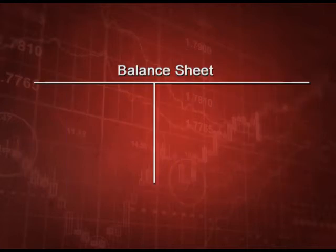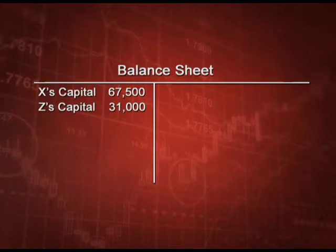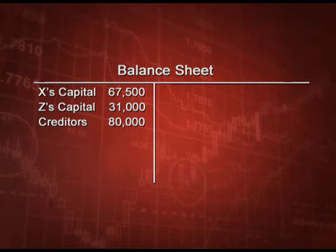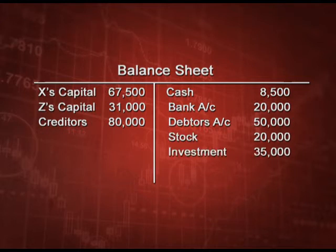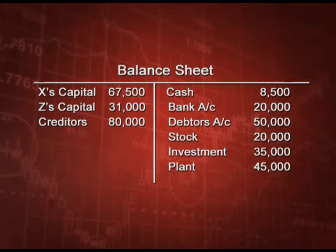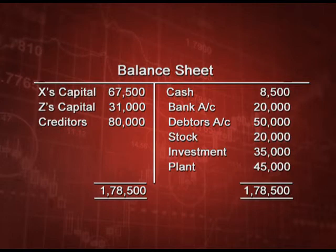In the revised balance sheet, X and Z continue with balances of 67,500 and 31,000. Creditors remain unchanged at 80,000. On the asset side, cash is reduced by the amount paid to Y, while assets that changed are shown at new values and unchanged assets at original values. The balance sheet total is 1,78,500.